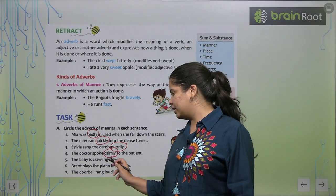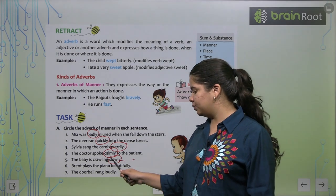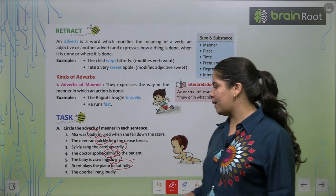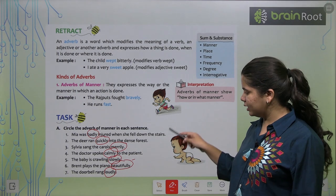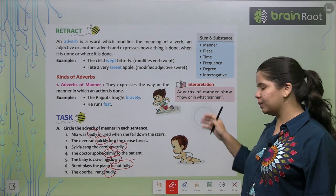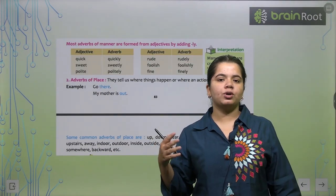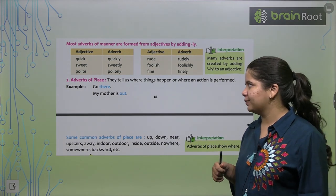The doctor spoke calmly. Calmly is the way she sang. So this is our adverb of manner. The baby is crawling slowly. Brent plays the piano beautifully. Next, the doorbell rang loudly. So I hope you have understood these sentences. And you have to know that we will use adverb of manner in which way. When the action is about it, the word will tell us and modify it. That is our adverb of manner.